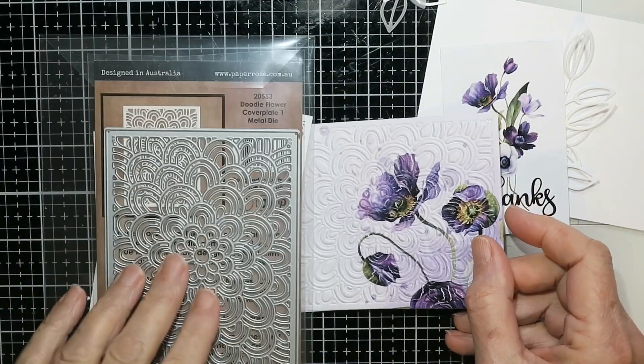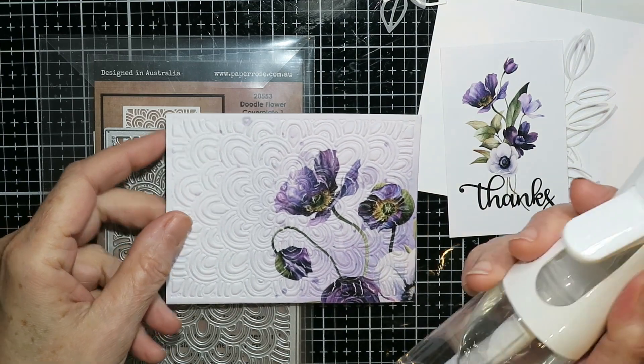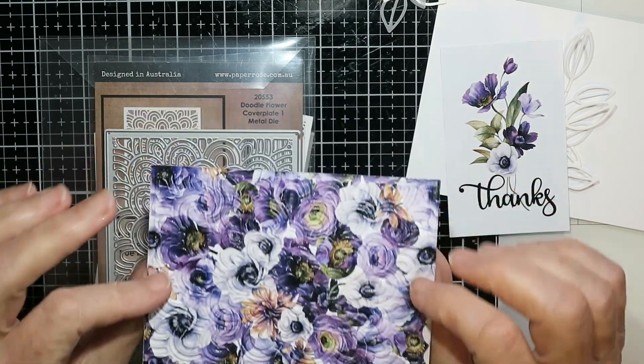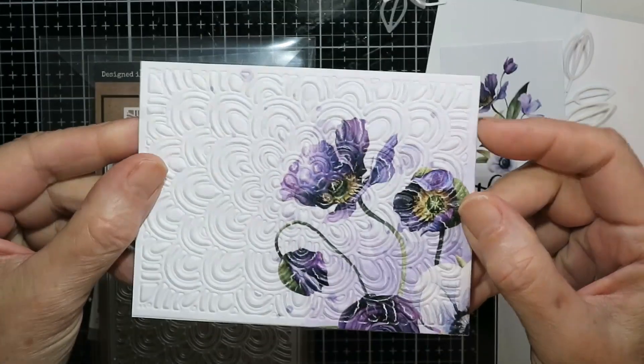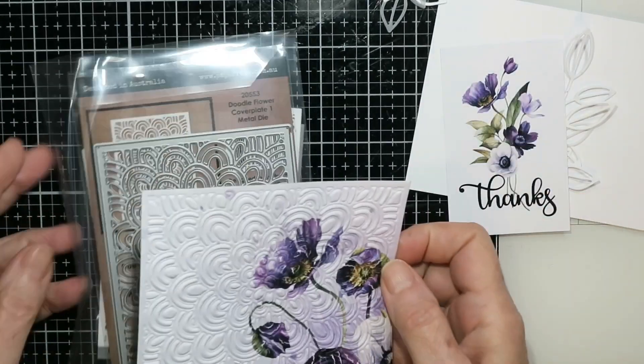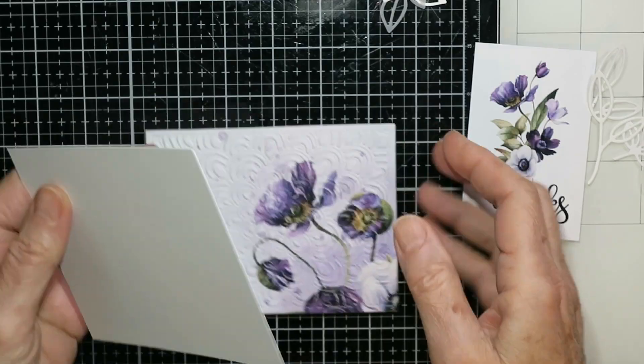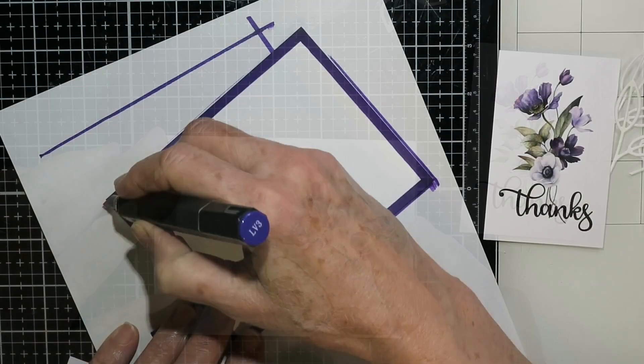So the first card, I decided to emboss it with the doodle flower cover plate. I misted up that piece of cardstock with water before I put it through with the rubber mat and embossing plate. And I love the texture that it gives. That's the card front. Now I looked at it and I thought it was just too white.